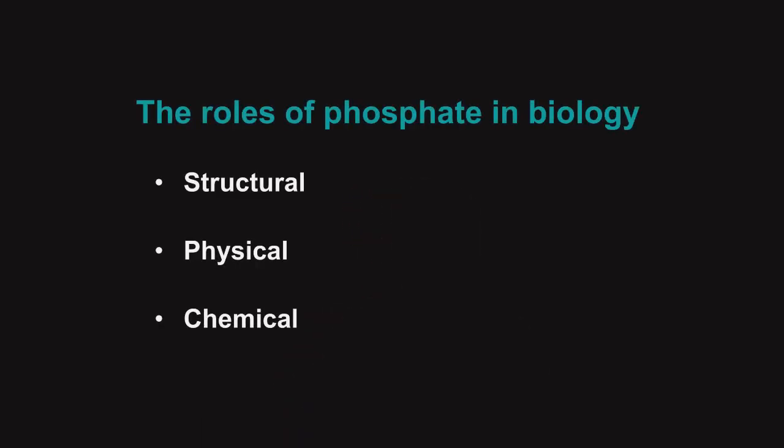So, what's special about phosphate? In order to begin to answer that question, we need to talk a little bit about the roles of phosphate in biology. It turns out that phosphate is used across biology in a ton of different ways. There's structural elements to its chemistry, physical chemical elements, and just normal reactive chemical elements. We're going to go over those and then talk a bit about how this poses a problem in terms of origin of life chemistry.